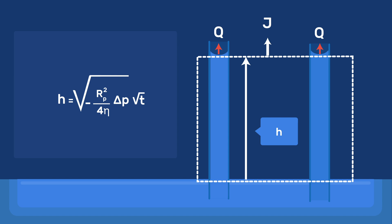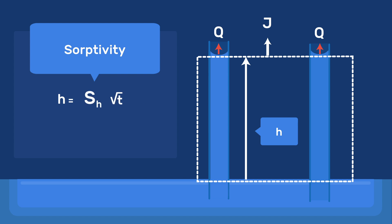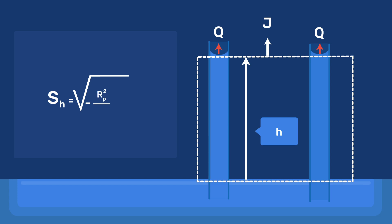We write this by introducing sorptivity, sh, for the proportionality constant between h and square root of time, where h is equal to sh times square root of time. And sh is the square root of minus rp squared over 4 eta delta p. This proportionality is very important.